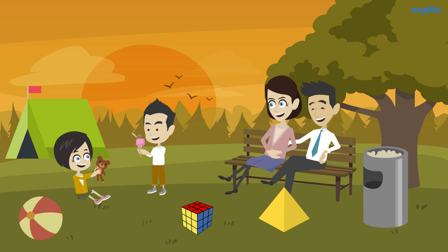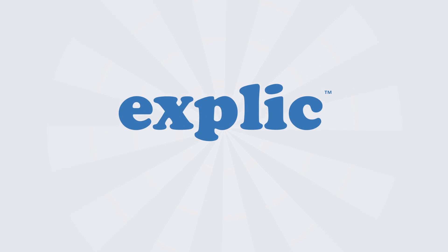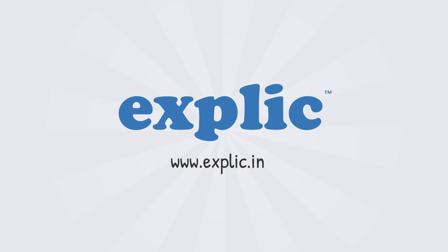We see three dimensional shapes every day, such as a ball, a dustbin, a Rubik's cube, a tent and an ice cream cone.